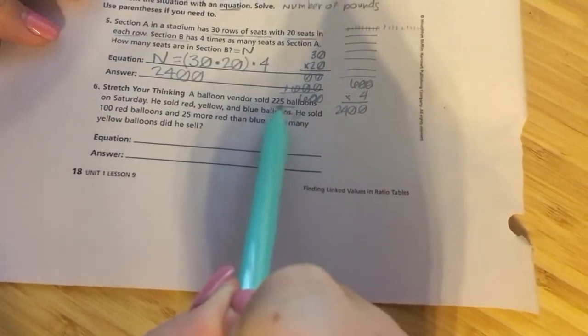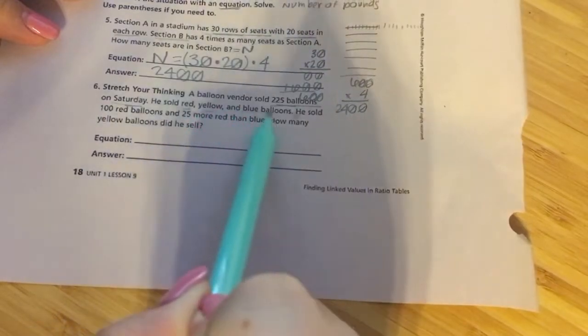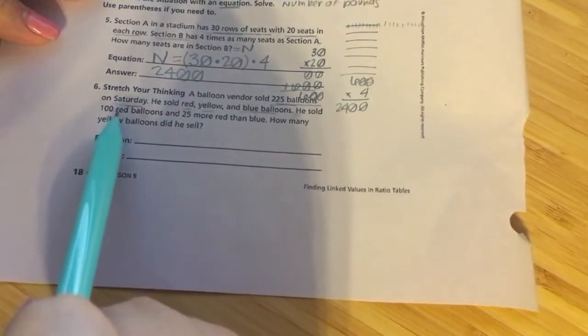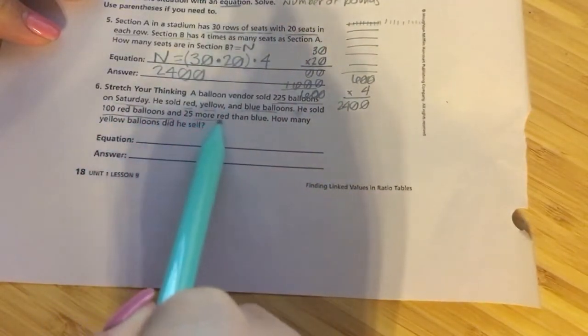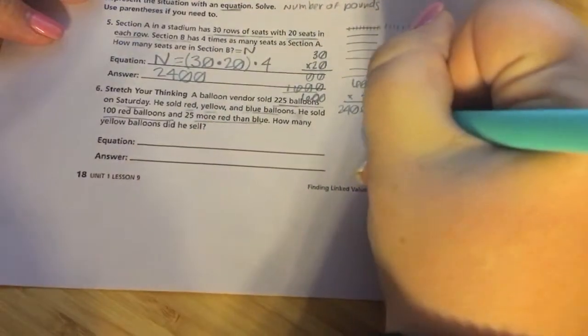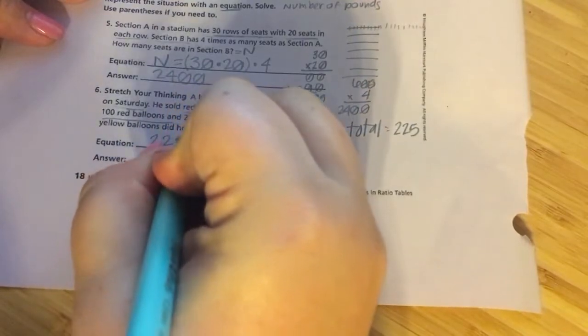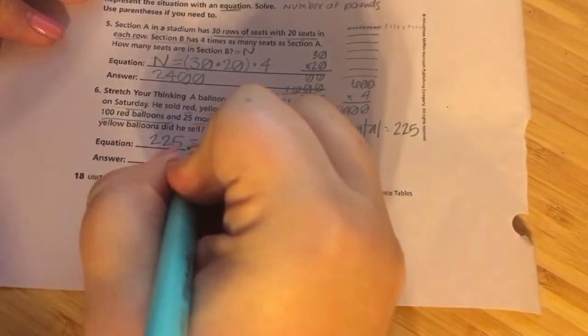So we're going to stretch our thinking. A balloon vendor sold 225 balloons on Saturday. He sold red, yellow, and blue balloons. He sold 100 red balloons and 25 more red balloons than blue. How many yellow balloons did he sell? Oh, man. I'm not going to be able to draw a picture of this that would fit on this piece of paper.